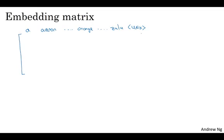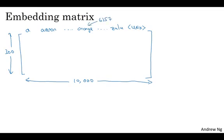What we're going to do is learn an embedding matrix E, which is going to be a 300 dimensional by 10,000 dimensional matrix. If you have 10,000 words in vocabulary, or maybe 10,001 if the unknown word token is one extra token. And the columns of this matrix will be the different embeddings for the 10,000 different words you have in your vocabulary. So orange was word number 6257 in our vocabulary of 10,000 words.